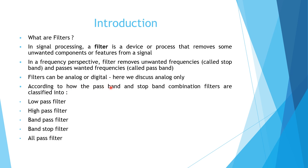In an analog filter, the circuit is made up of resistors, capacitors, and inductors, and according to the combination we get some filter response. In a digital filter, there will be a processor and a program written for it, so the filter is essentially a program that runs on the processor, and the processor takes care of the filtering part.